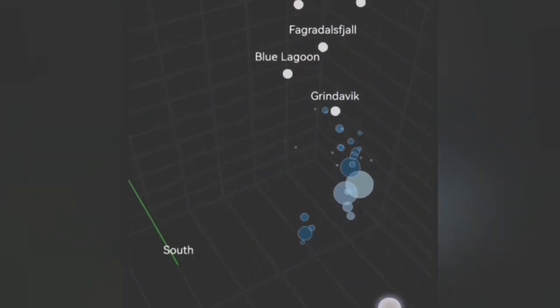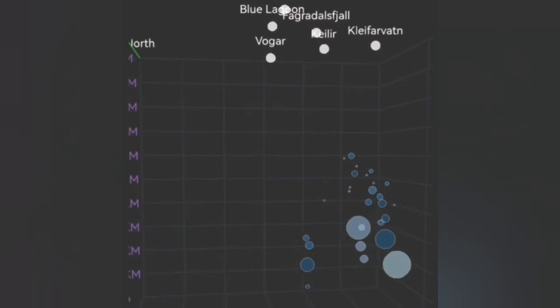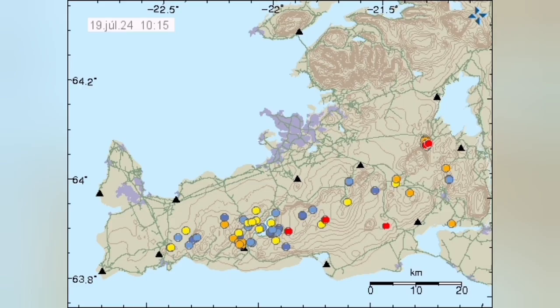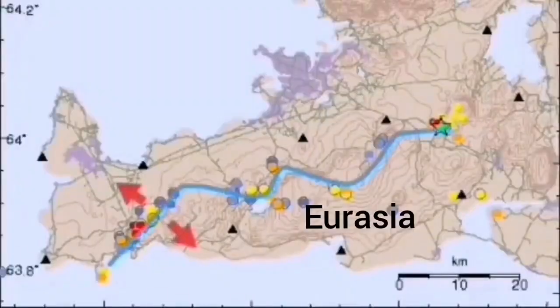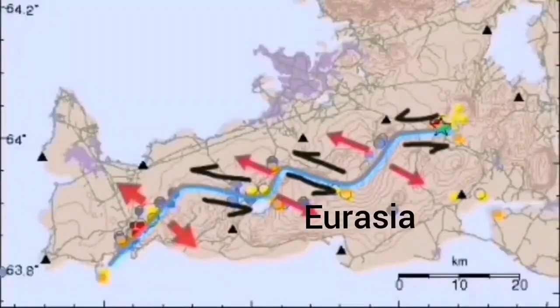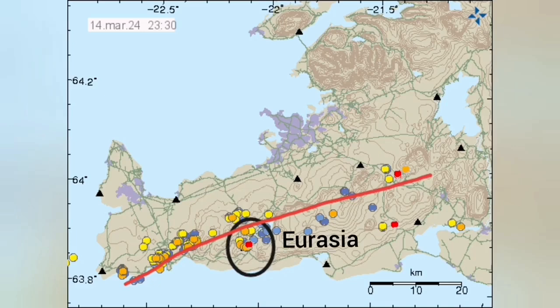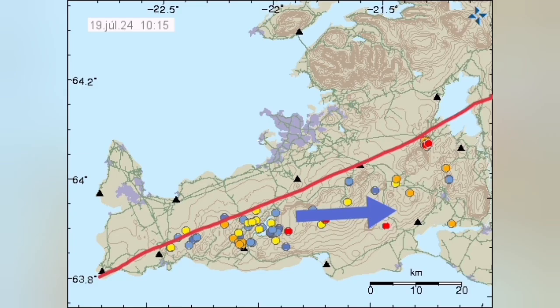This is the contact point of the Eurasian and American plates. The Eurasian plate is moving eastward, and as it moves, the transform faults transfer the movement toward the east. This is inside the Eurasian boundary part — you can see it in the red line. This is where the earthquakes and eruptions are happening.